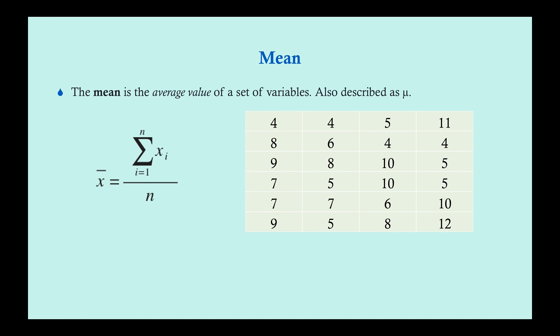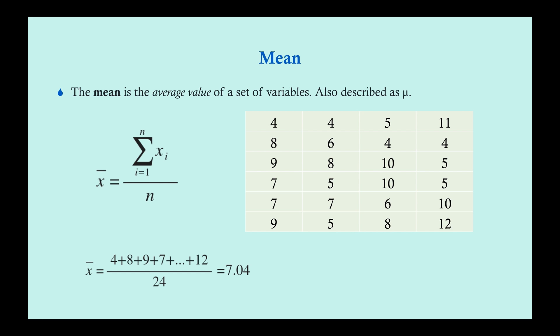Let's do a quick practice. Here you have 24 variables — just random numbers; I could have given you temperatures, birth weights, anything. All you do is take these numbers, add them up, and divide by 24 since there are 24 numbers. So: 4 plus 8 plus 9 plus 7, all the way to 12, divided by 24 — and you get your mean of 7.04. This mean is going to be very important as we get into variation and standard deviation.